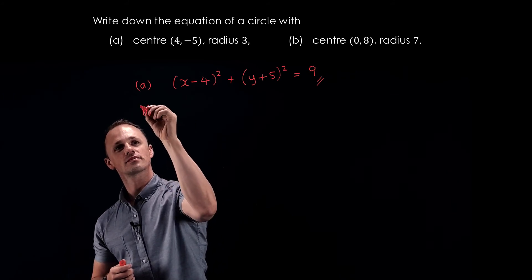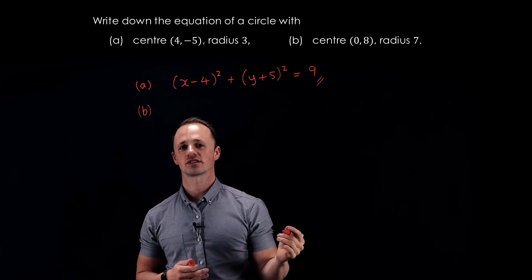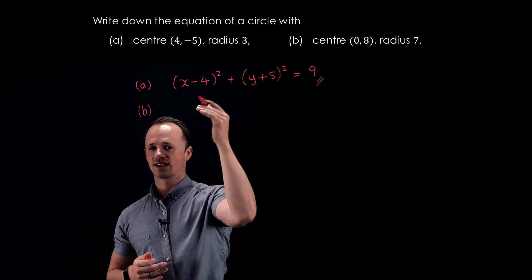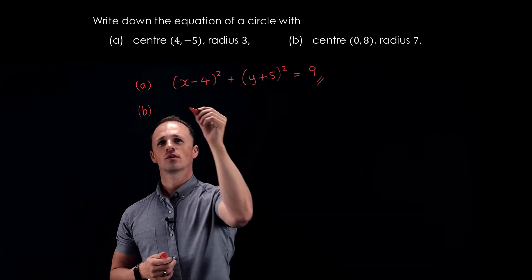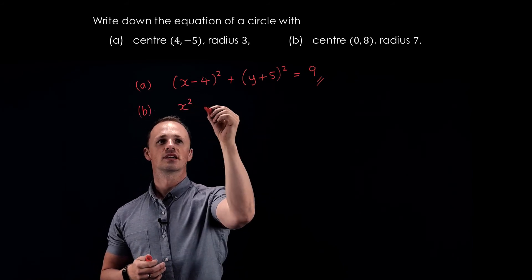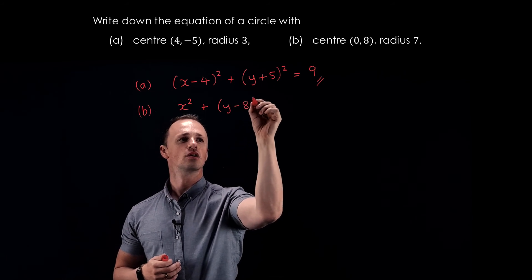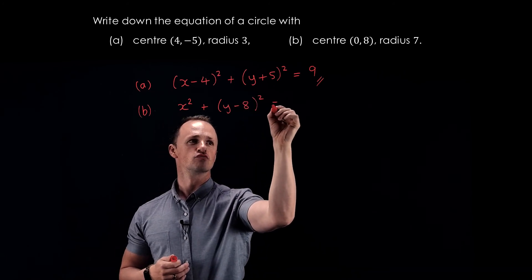In part B, we've got a circle with center (0, 8) and radius 7. Rather than writing (x - 0)², we can simply write x². Then we have (y - 8)² equals the radius squared. 7² is 49.